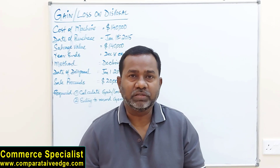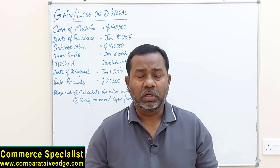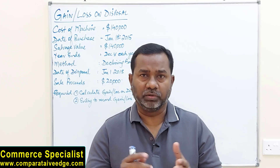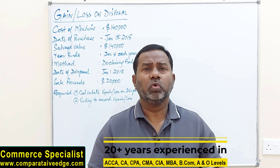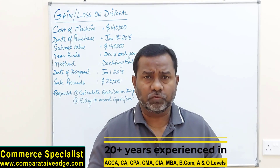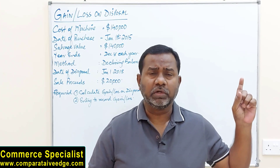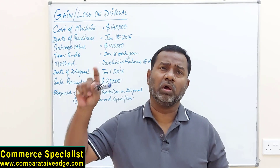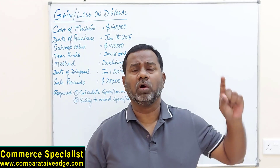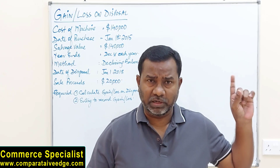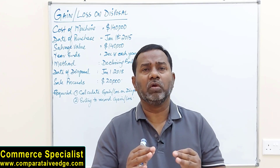In this video we are going to discuss how to calculate gain or loss when non-current assets are sold. Another name for sale of non-current asset is disposal of non-current asset. I have uploaded three videos so far on depreciation — one on calculating depreciation from different methods, one on IAS 16 revaluation, and one on the main difference between straight line and declining balance method. But in this video I am going to discuss how to calculate gain or loss when you sell your non-current assets.